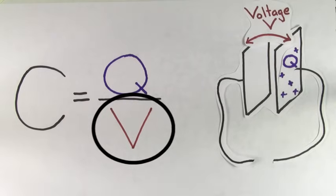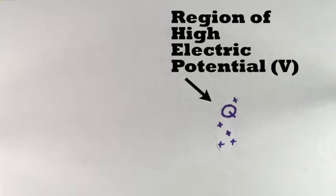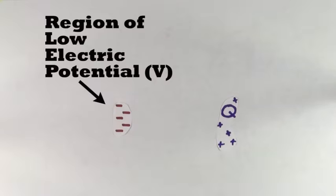What the voltage is referring to in this formula is the fact that when a capacitor stores charge, it will create a voltage or a difference in electric potential between the two pieces of metal. Electric potential is high near positive charges, and electric potential is low near negative charges.